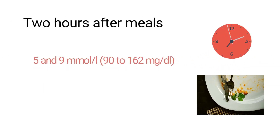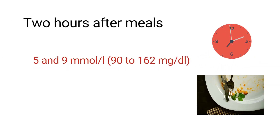2 hours after a meal, blood glucose levels should be 5 to 9 millimoles per liter or 90 to 162 milligrams per deciliter.